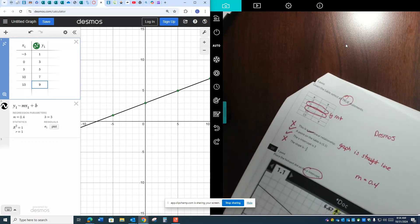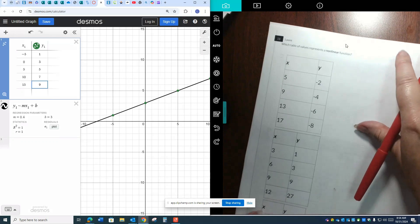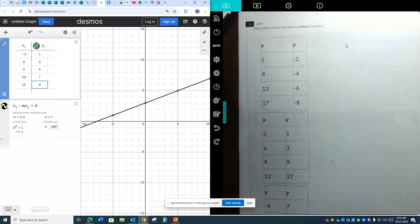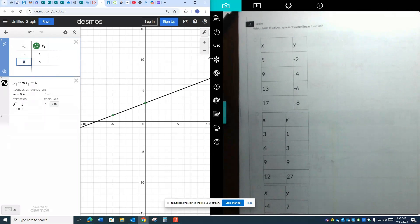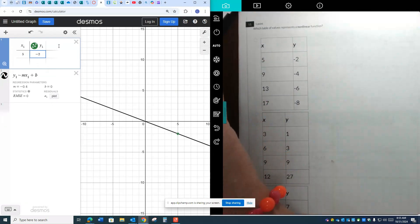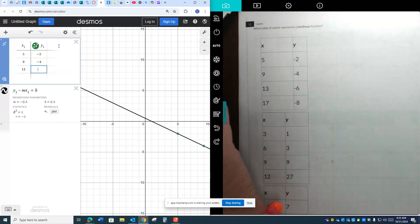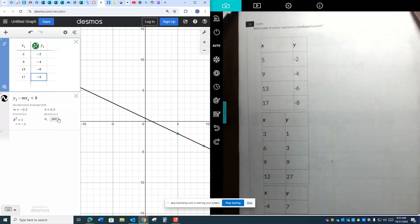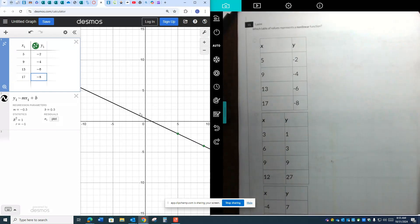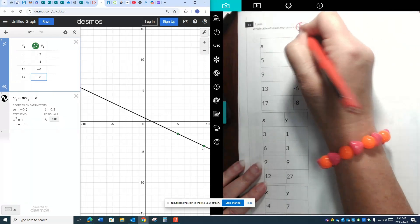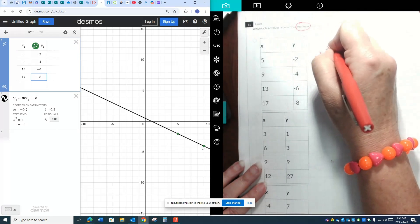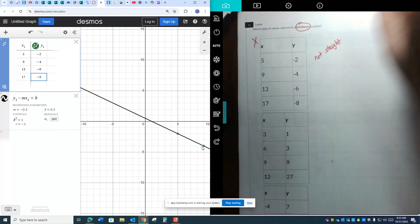Number 11 says which table of values represents a nonlinear function. This one takes a little time, but Desmos does make it very easy. So really, all we have to do is type in the table. 5 paired up with negative 2. We've got 9 paired up with negative 4. We've got 13 paired up with negative 6. We've got 17 paired up with negative 8. And if you notice, the graph, they graphed it for you. This is linear. It's making a straight line. We are looking for nonlinear. So we want the one that's not straight. So it's not this one. This one was straight. Let's keep going.